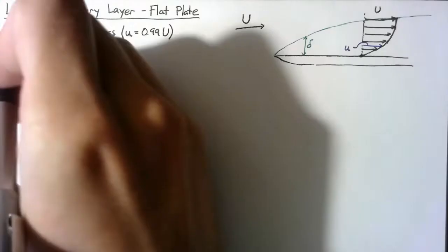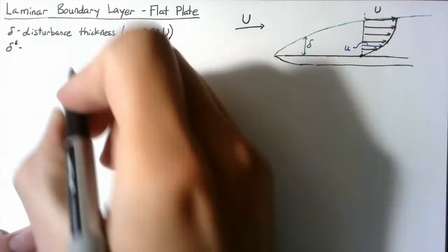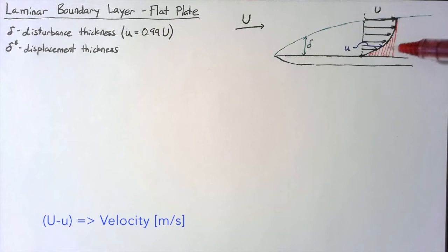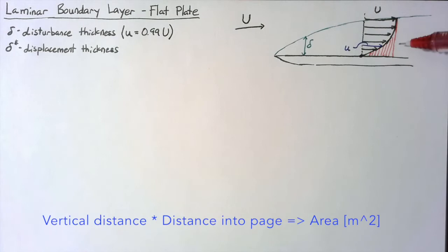Now there are two other thicknesses that we'll define. The next is delta star, which we call the displacement thickness, and this is defined based on the mass deficit. If you take this area in the boundary layer, this is going to be capital U minus lowercase u — a velocity multiplied by some area, which is going to be some vertical distance multiplied by some distance into the page.